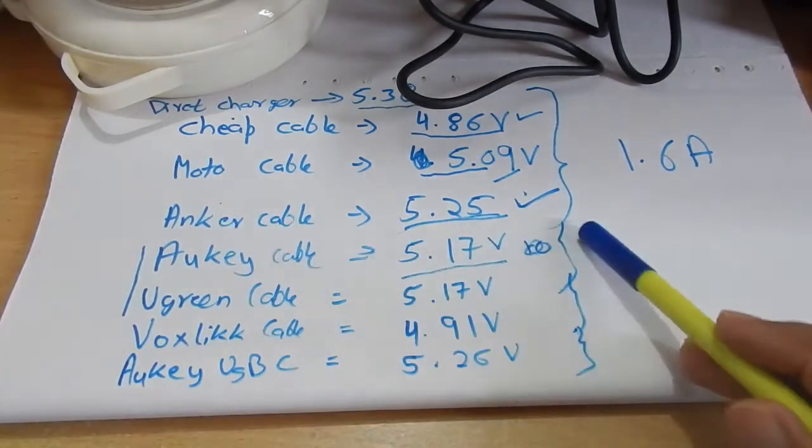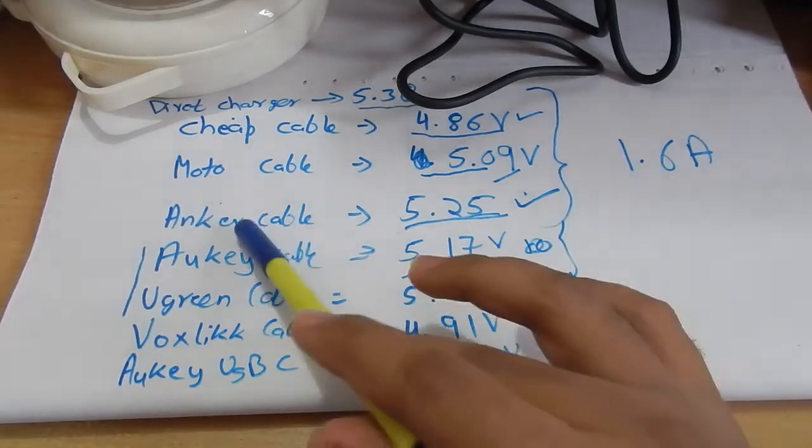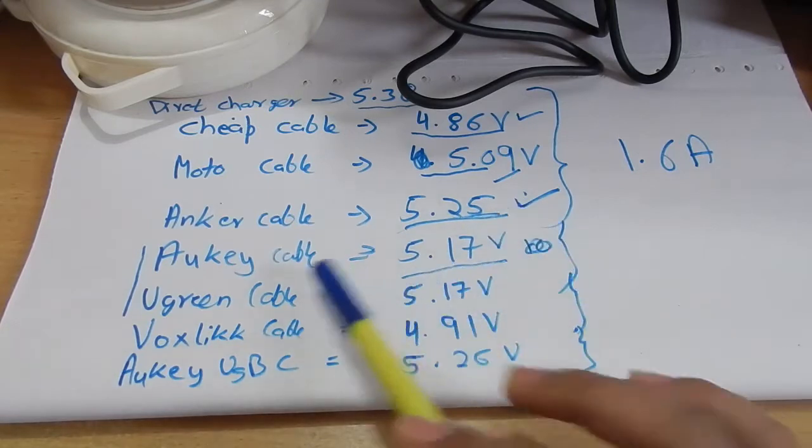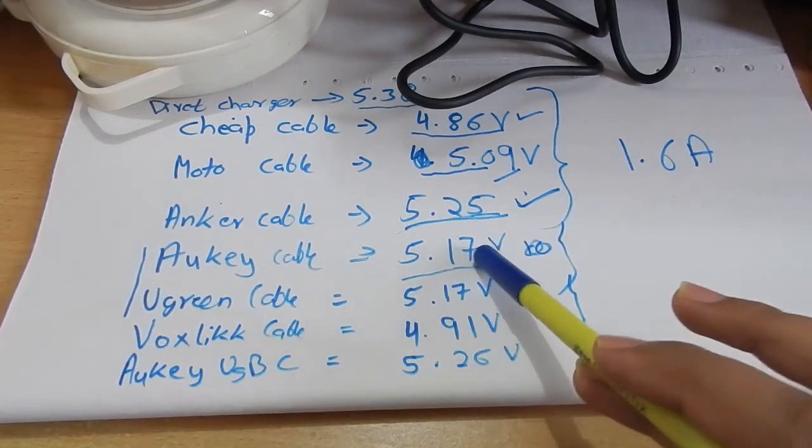In micro USB cable, the Anker was the winner that gave us 5.25 volt and the Auki gave us 5.17 volt which was micro USB cable.